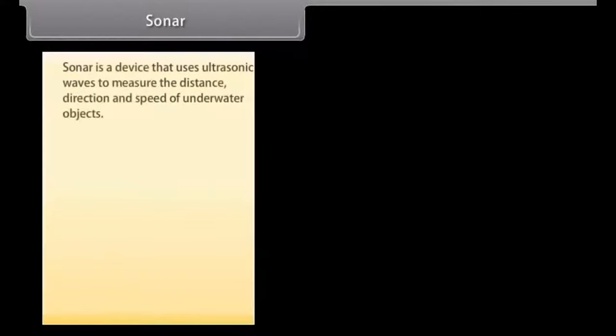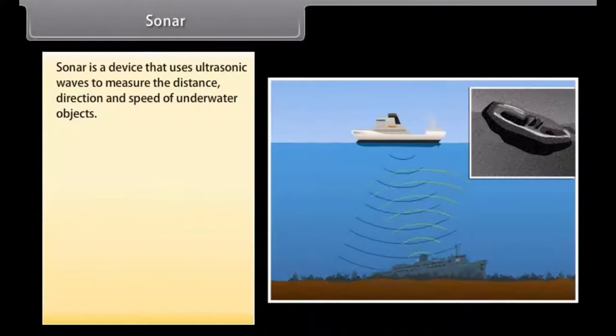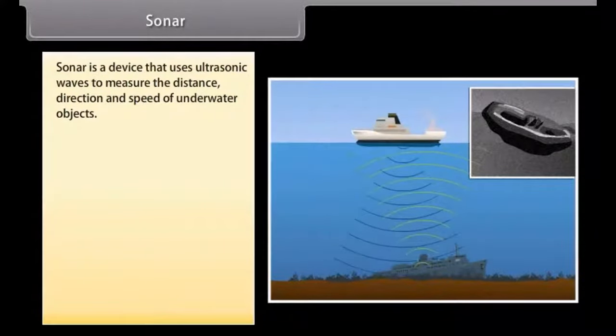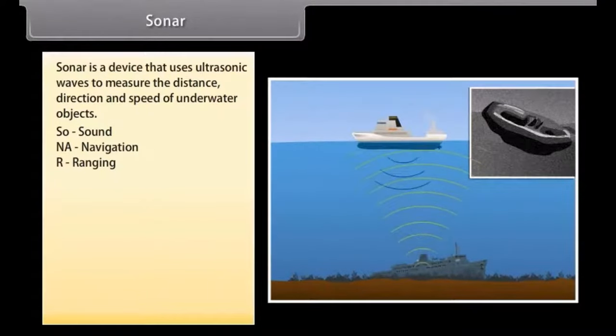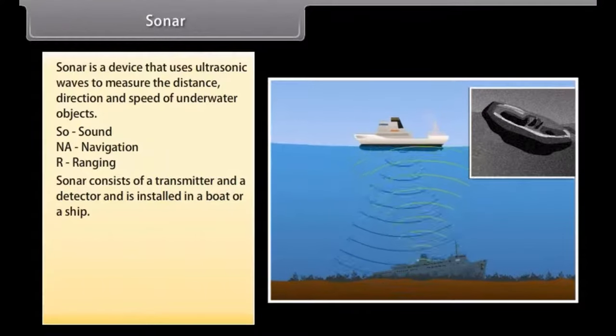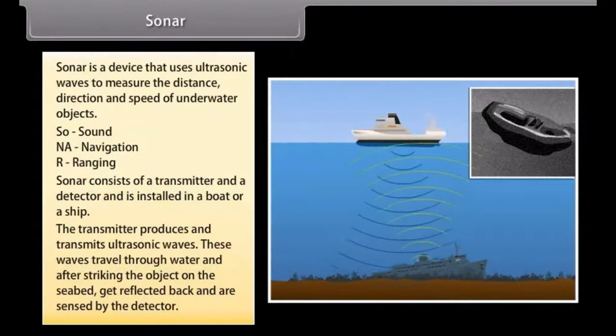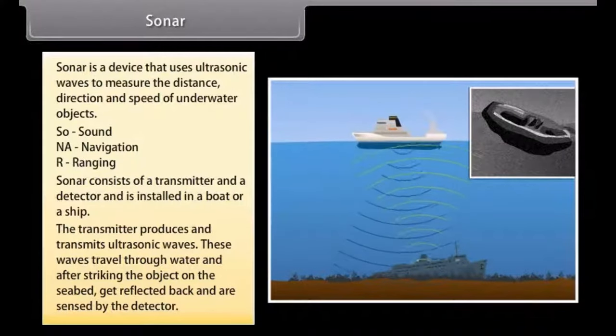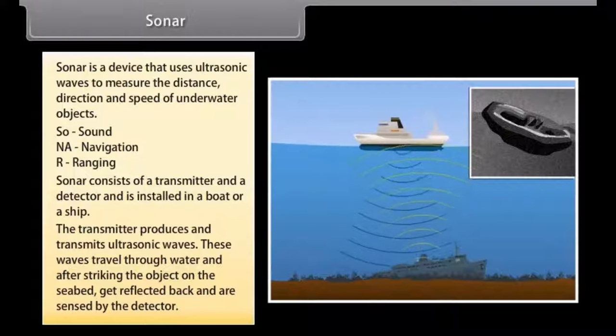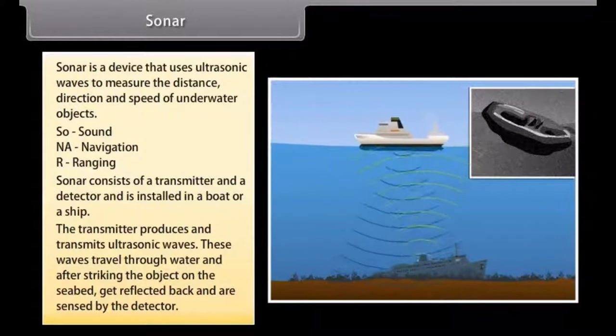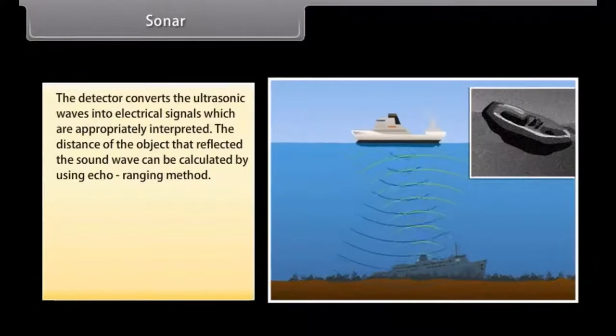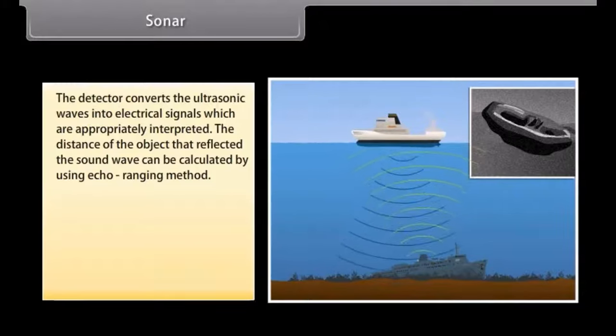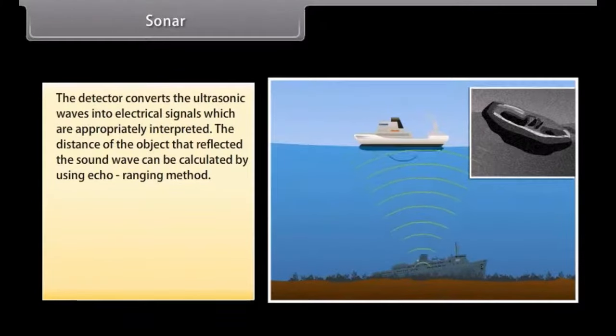SONAR. Sonar is the device that uses ultrasonic waves to measure the distance direction and speed of underwater objects. The word sonar stands for sound navigation and ranging. Sonar consists of a transmitter and a detector and is installed in a boat or a ship. The transmitter produces and transmits ultrasonic waves. These waves travel through water and after striking the object on the seabed get reflected back and are sensed by the detector. The detector converts the ultrasonic waves into electrical signals which are appropriately interpreted. The distance of the object that reflected the sound wave can be calculated by using echo ranging method.